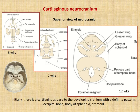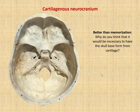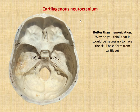Looking from a superior view down on the neurocranium, you can see highlighted in beige the area that is going to be the cartilaginous neurocranium — that is collectively the base of the cranium, where the brain sits and has contact. So the occipital bone, body of the sphenoid, and ethmoid are going to be cartilaginous in their origin. Why might the skull base form from cartilage instead of the sides and top, which are intramembranous and don't go through a cartilaginous precursor?